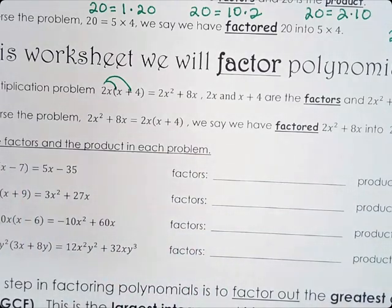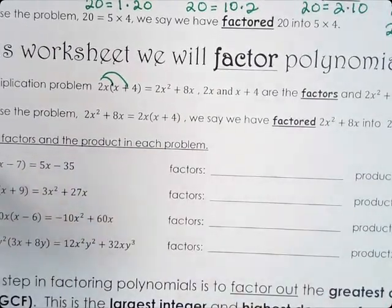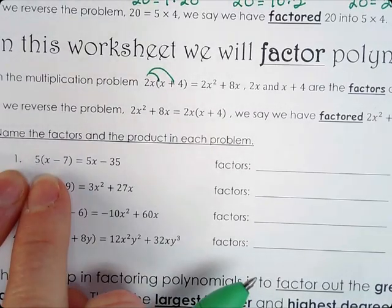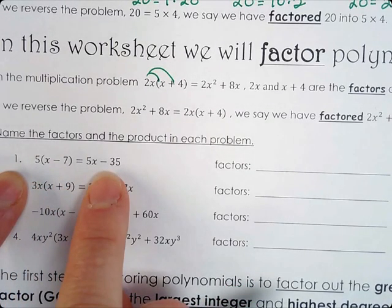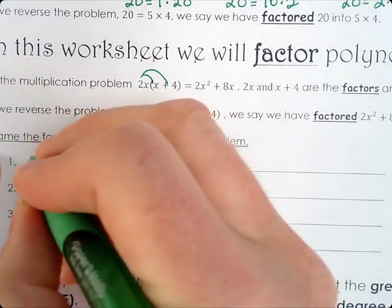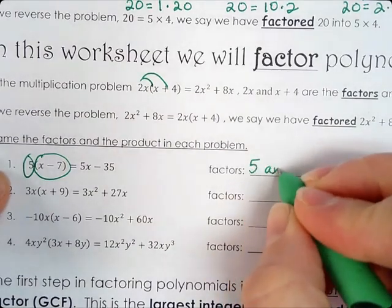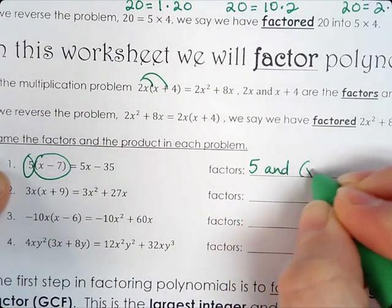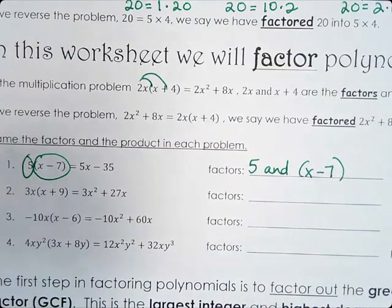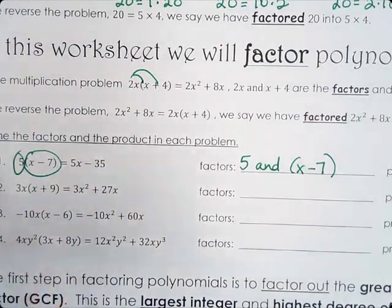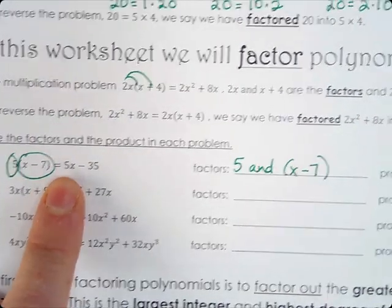Our first part is just naming the factors and naming the product of each problem. Looking at this first one, we have 5 times (x minus 7) equals 5x minus 35. The factors are the terms being multiplied — so 5 and (x minus 7) are your factors. The product of those factors is the outcome: 5x minus 35.